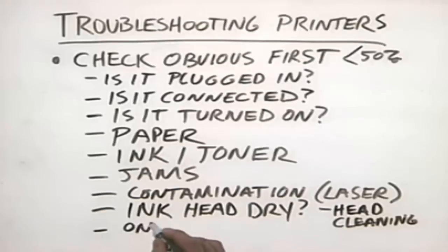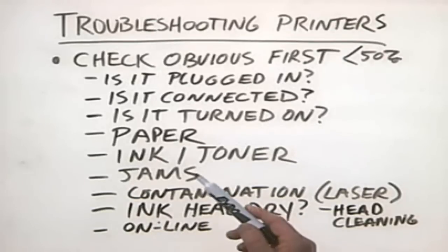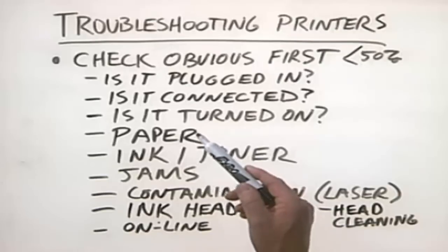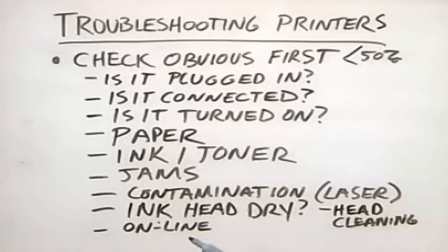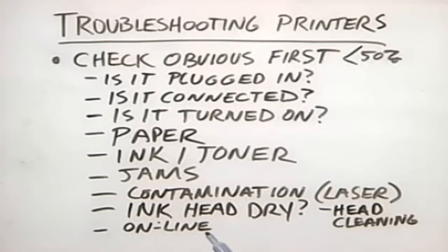Another thing to check for is whether the printer is online. Many problems — such as a paper jam or an out-of-paper error — will cause many laser printers to go offline, meaning they're on and still accepting jobs, but not printing anything because the printer thinks there's still something wrong. There's usually a button on the front of the printer that says 'online,' and you can set the printer to go back online by simply pressing that button.